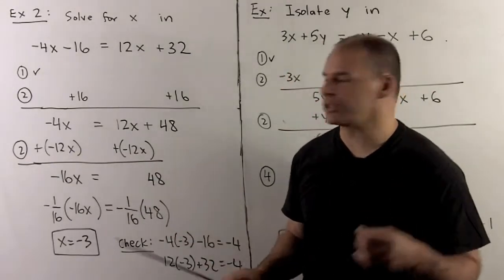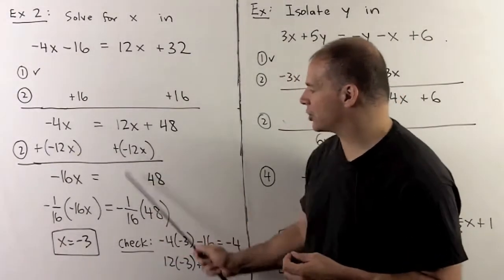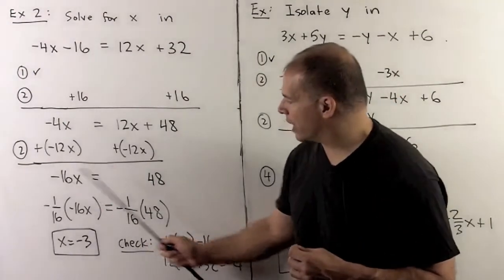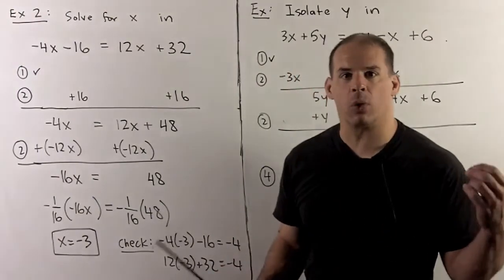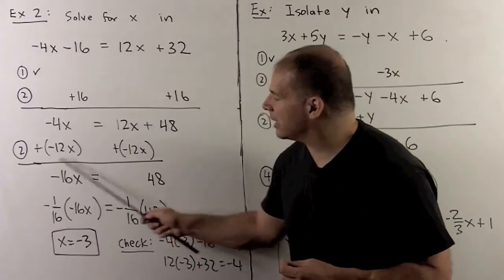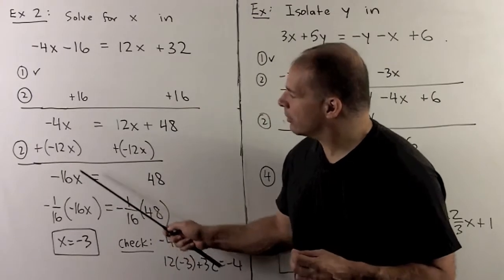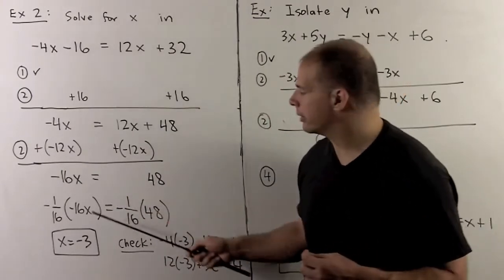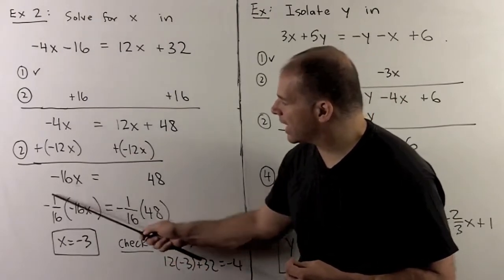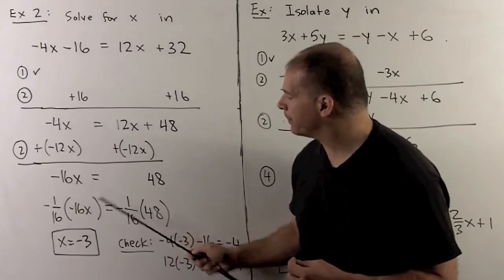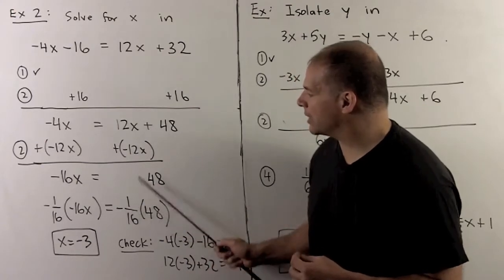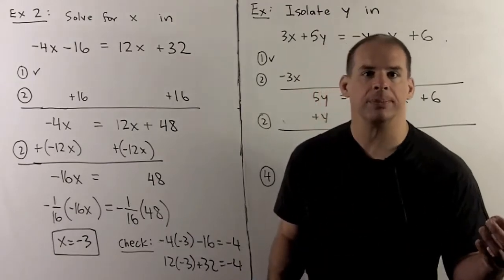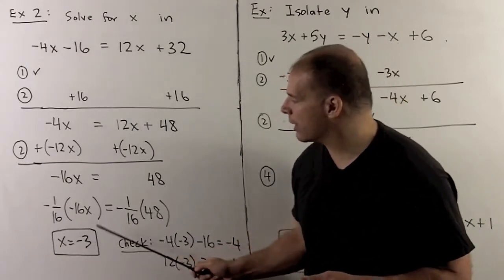Now I have all x terms on one side, non-x terms on the other. Moving to the next step — there's nothing to simplify — so go to step 4. I want to get rid of the minus 16, so I multiply both sides by minus 1 over 16. It cancels on the left-hand side. On the right-hand side, minus 1/16 times 48 reduces to minus 3. So x equals minus 3.